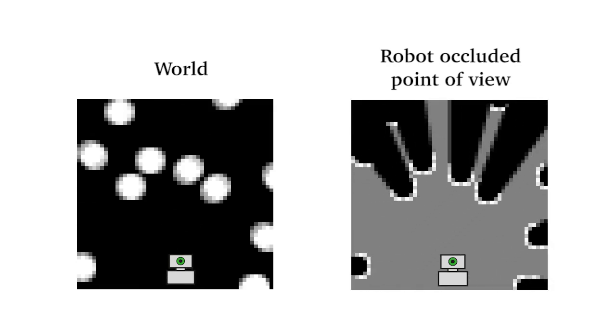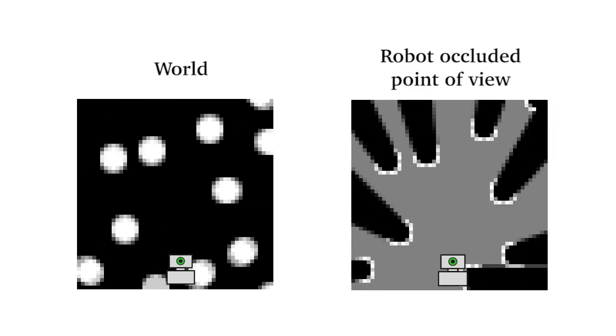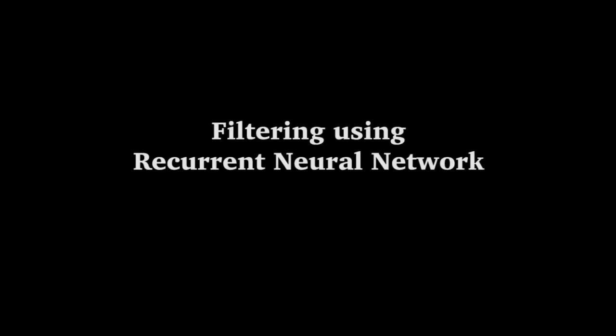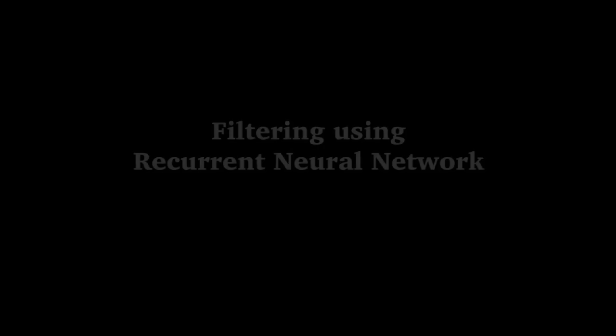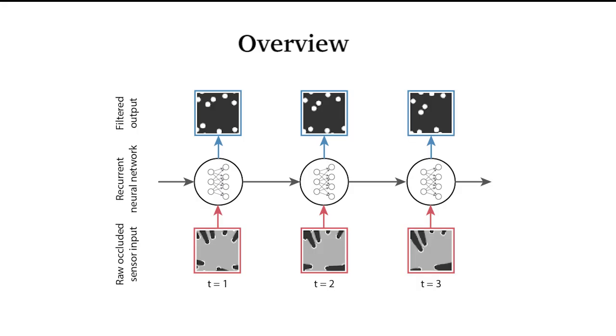Due to occlusions, not all objects are visible all the time. We utilize a deep recurrent neural network architecture to filter stream of raw sensor input and directly produce positions of all objects as output.